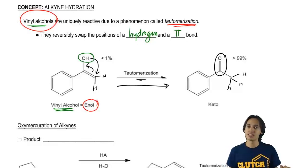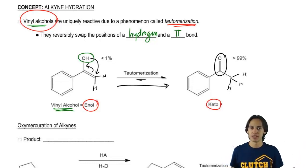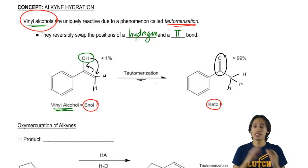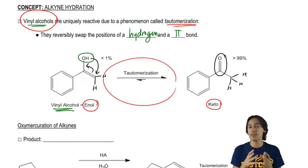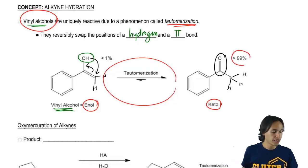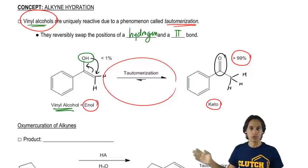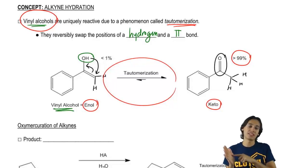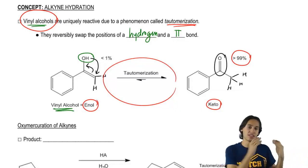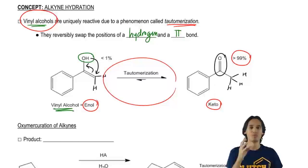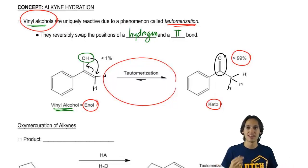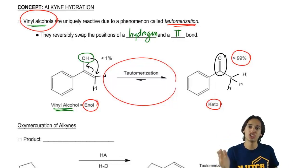The enol rapidly tautomerizes to the keto form. The keto form is just the ketone or the aldehyde that's produced after tautomerization takes place. This is a phenomenon that's constantly in equilibrium, but one of the arrows is much bigger than the other because the keto form is going to be highly favored over the enol form in almost all cases. So basically, any time that you hydrate a triple bond, you're actually going to get a ketone or an aldehyde as the product, and it's through this process of tautomerization.